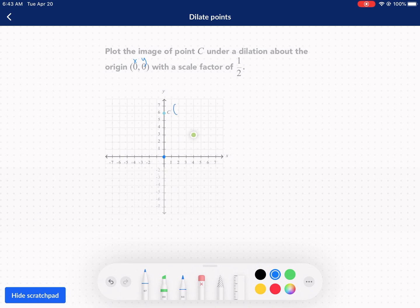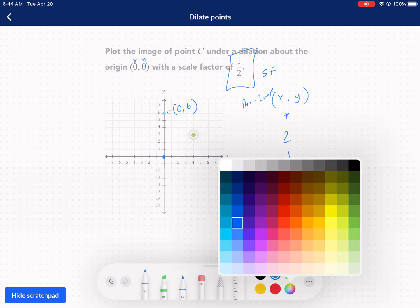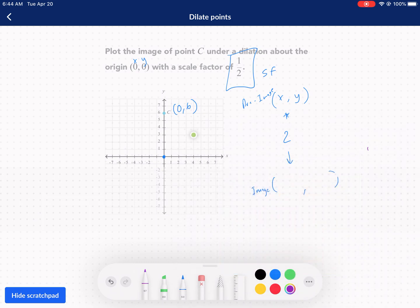We need to take the points of C, in this case, zero, six, and we're just going to multiply it by our scale factor. So, we take our x coordinate, take our y coordinate, multiply both of those by our scale factor, and that's going to get us our new dilation of the image where this was the pre-image. We know the coordinates of our pre-image. They are zero, six. We're going to multiply both of those by the scale factor.